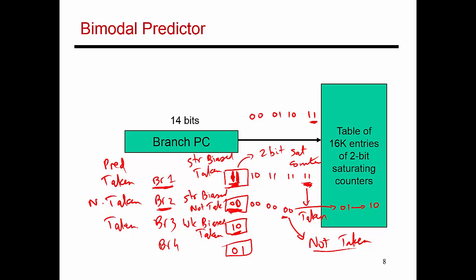And then similarly for branch 4, since it has a counter value of 0, 1, it's weakly biased as not taken. And so when I encounter branch 4 next, I'm going to predict not taken. So the prediction essentially depends on the most significant bit of the counter. If the most significant bit is a 1, as in these two cases, I'm going to predict taken. If the most significant bit is a 0, as in these cases, I'm going to predict not taken.